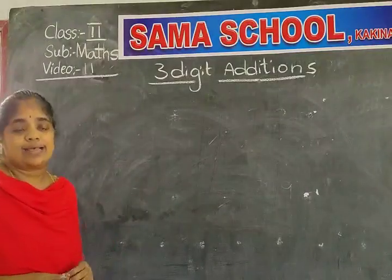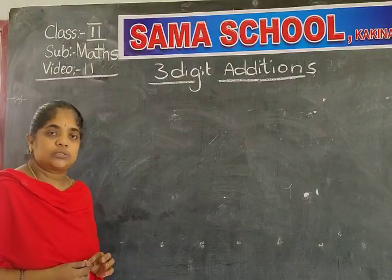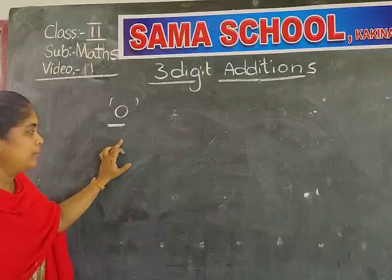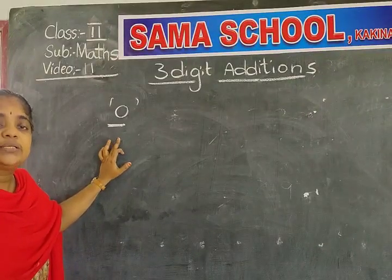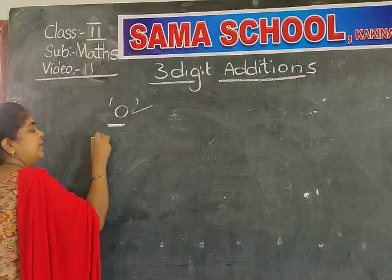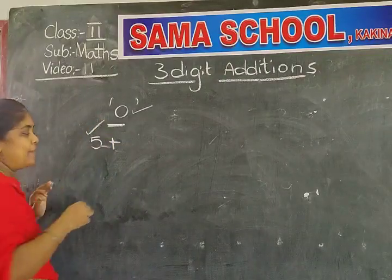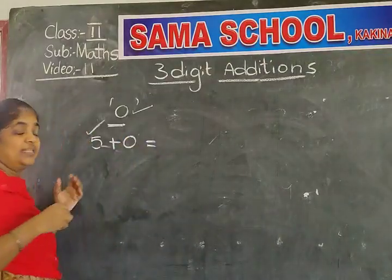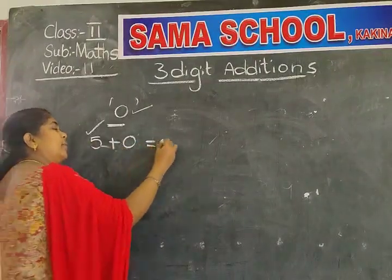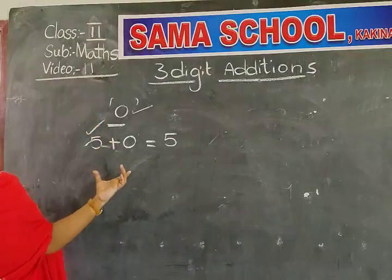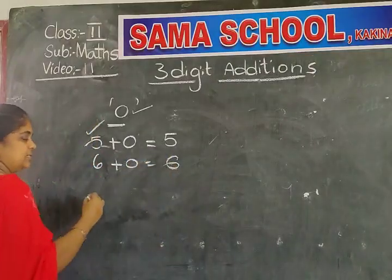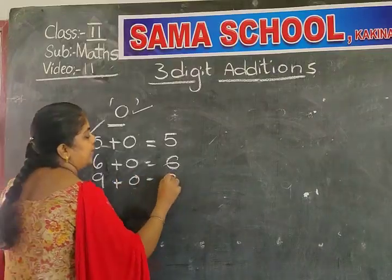We learned two rules in the last class. The first is the zero concept. If you add zero to any number — for example, five plus zero — the answer is five. If you add zero to six, you get six. If you add zero to nine, you get nine. Adding zero to any number gives you the same number.